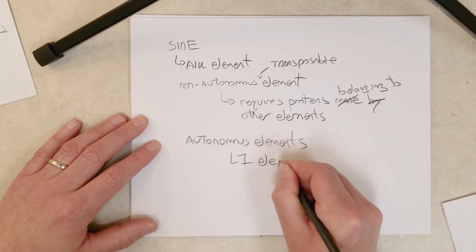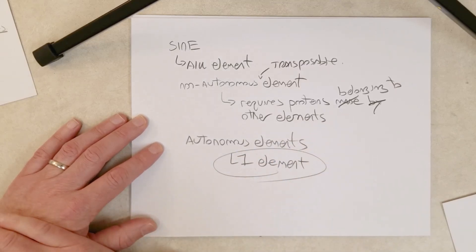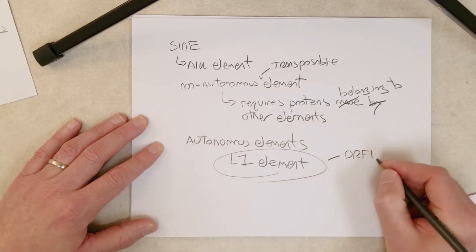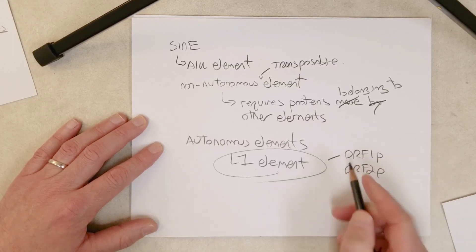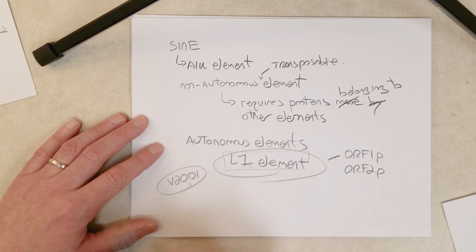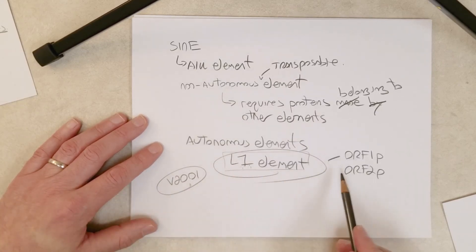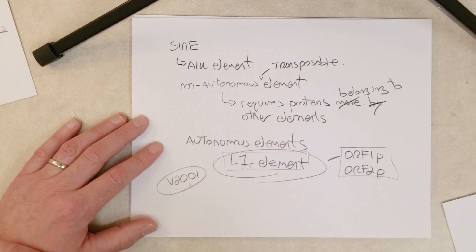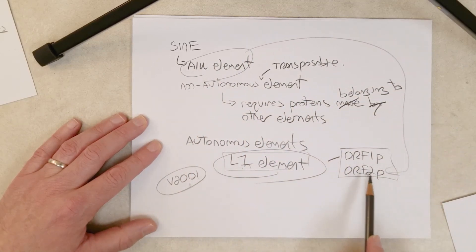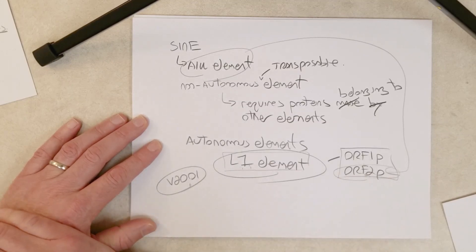The L1 element is an autonomous element. It encodes its own proteins needed for its own movement. What are the proteins? ORF1P and ORF2P. We covered it in video 2001 where we talk about the L1 element and its transposition mechanism. L1 encodes its own proteins, ORF1P and ORF2P, which are the proteins required to move the L1 element to new locations in the genome. The ALU element uses, requires just one of these proteins, ORF2P, for it to move to new locations, and that's why it's considered a non-autonomous element.